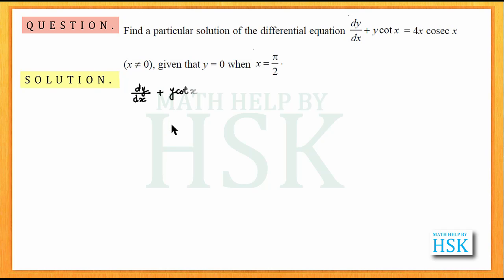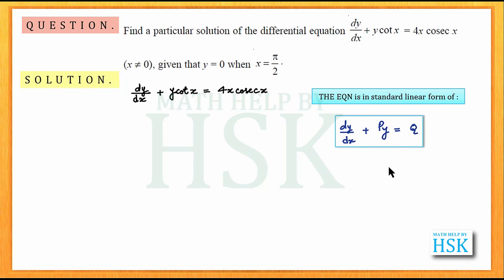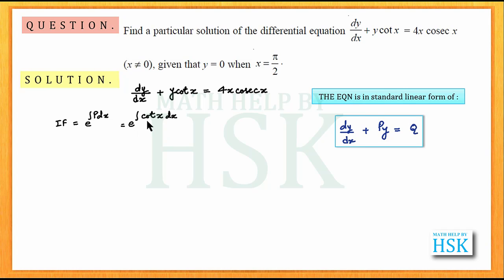To solve this question, first of all we take the differential equation, and as it is in the standard linear form, we can see that P is equal to cot x and Q is equal to 4x cosec x. So the integrating factor is given by e to the power of integral of P dx, which equals e to the power of integral of cot x dx. Since the integration of cot x is equal to log sin x, this will be equal to e to the power of log of sin x, or simply sin x.